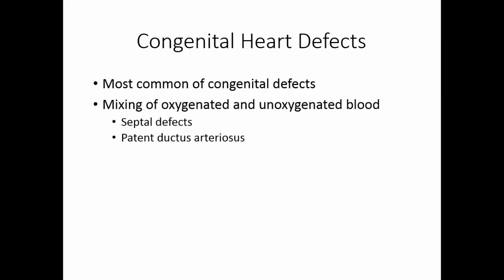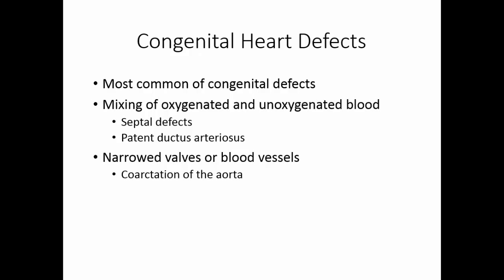Another major congenital issue is narrowed valves or blood vessels. One common example is coarctation of the aorta, where the aorta is too narrow for blood to adequately circulate to the systemic circulation. Tetralogy of Fallot is the most serious congenital heart defect — it is four problems that combine both narrowed valves and blood vessels and the mixing of oxygenated and unoxygenated blood.